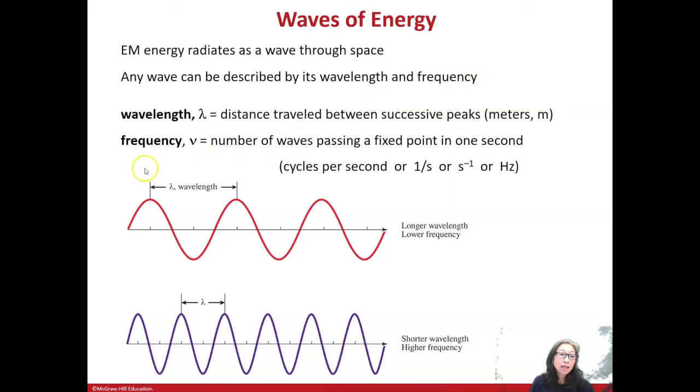Now frequency is the other characteristic. And frequency is how many waves pass through a point in one second. This red wave that has this wavelength, you would take one point. So choose this spot right here and count how many waves go through that point in one second.